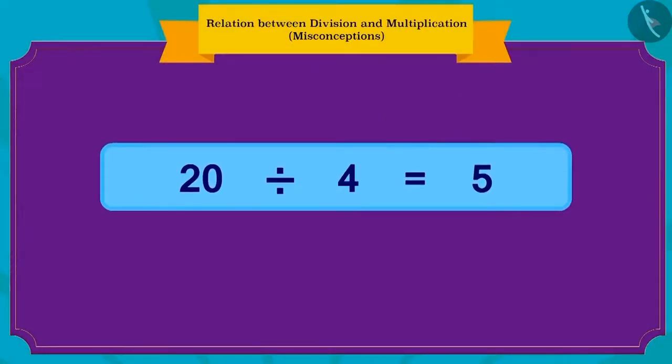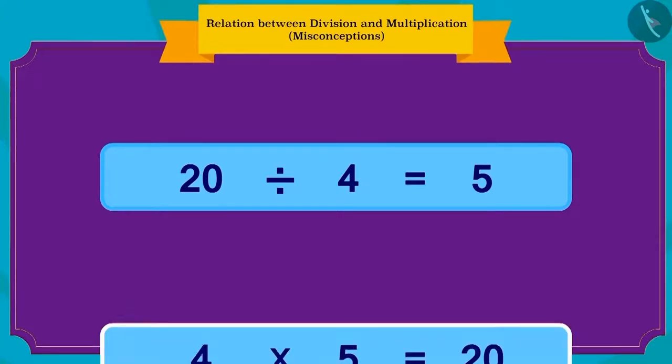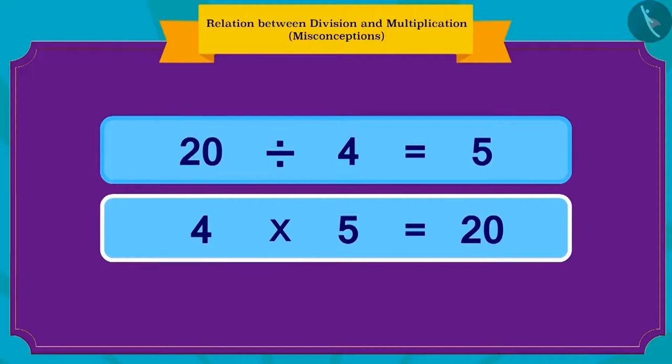Children, how can we write this in terms of multiplication? Absolutely correct. This is the way in which we can write it in terms of multiplication. Four pencils and each pencil costs 5 rupees, so the total is 20 rupees.